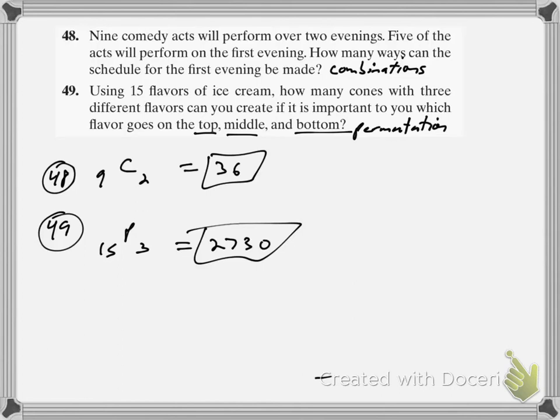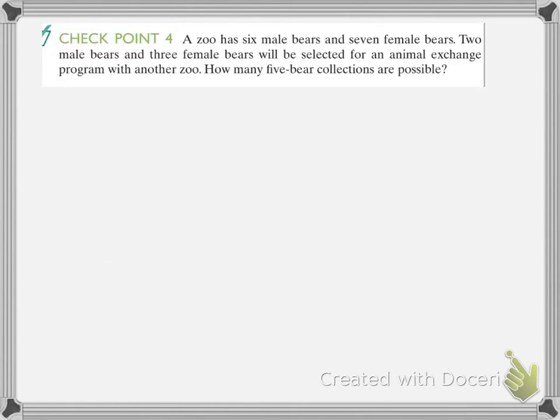One more in this section. This one uses two different principles we've looked at. A zoo has six male bears and seven female bears. Two male bears and three female bears will be selected for an animal exchange program with another zoo. How many five-bear collections are possible?